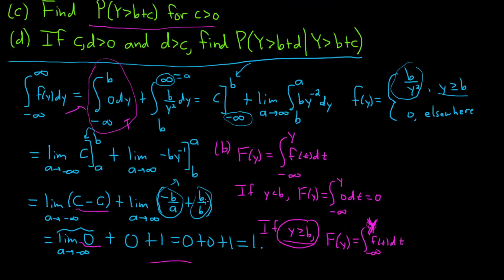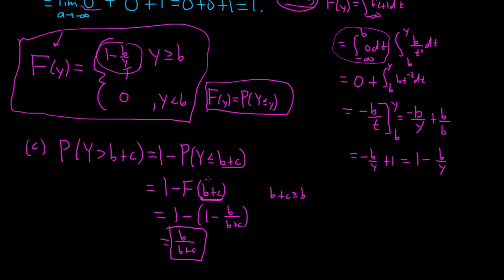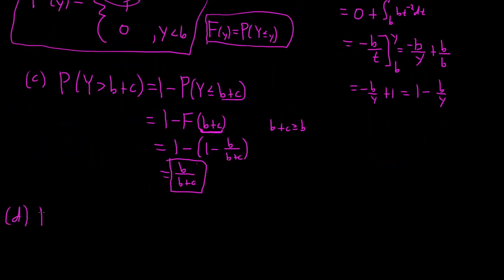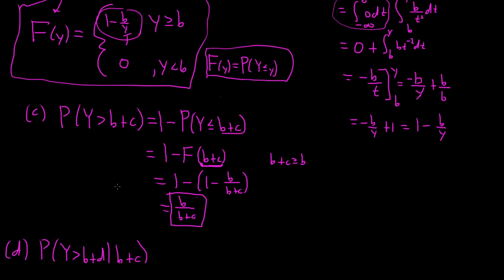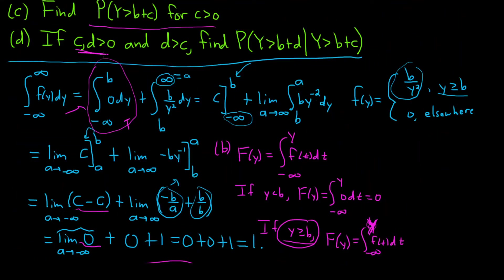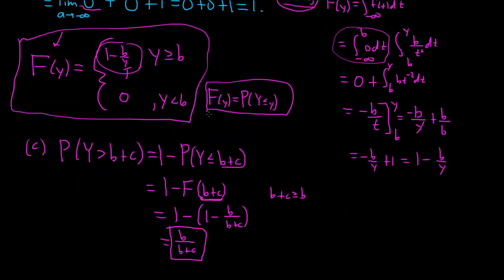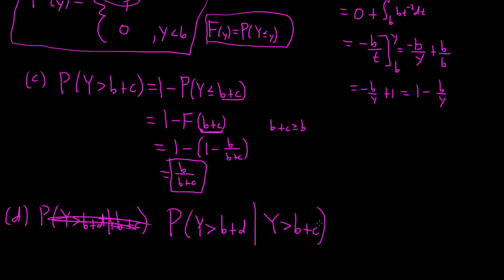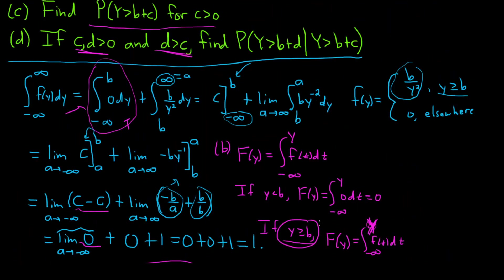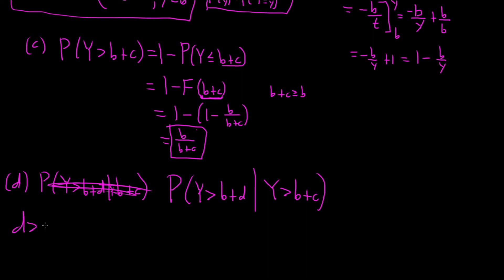Part D: find P(Y > b+d | Y > b+c), where c and d are positive and d is greater than c. Using the conditional probability formula, this equals P(Y > b+d AND Y > b+c) divided by P(Y > b+c). Since d is greater than c, b plus d is greater than b plus c, so the intersection simplifies to just Y > b+d.